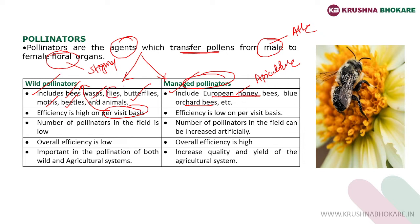The efficiency of wild pollinators on a per-visit basis is high. For example, a wild fly visiting a flower may carry more pollen than a managed pollinator. So the efficiency per visit of managed pollinators is low compared to wild ones. The number of wild pollinators per field is low because their population is naturally controlled by nature, but the number of managed pollinators is high because we can increase and manage their population artificially.